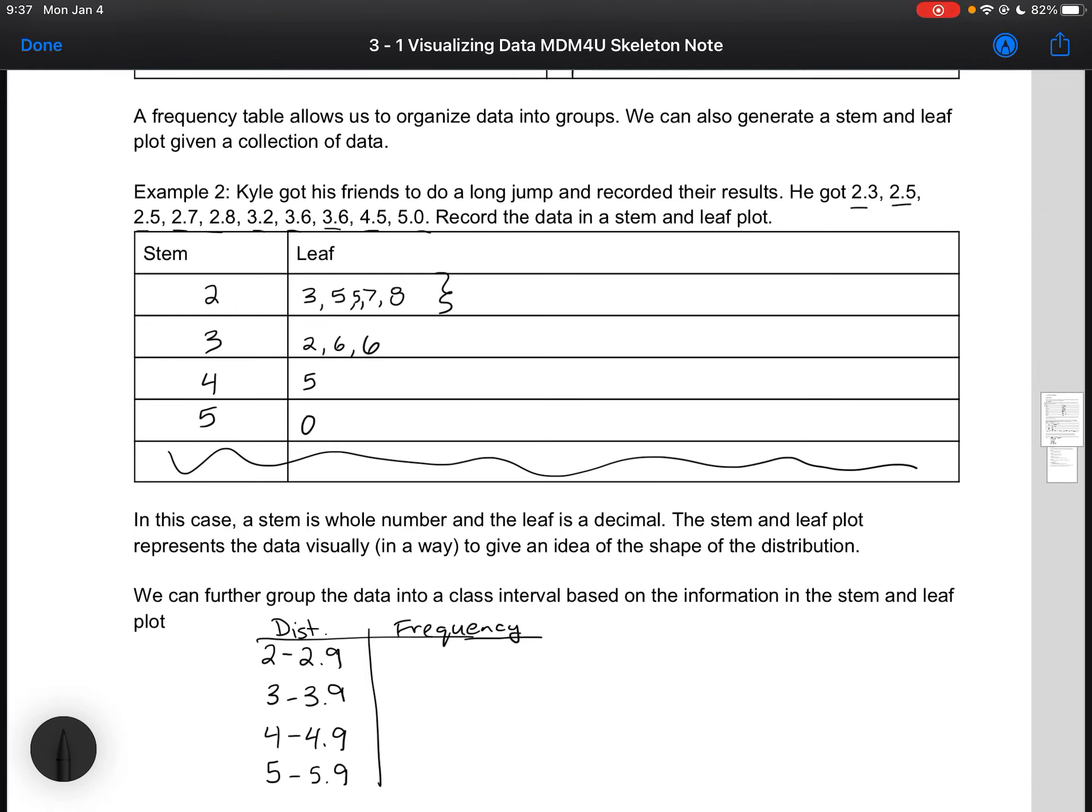So another way to organize your data. The stem and leaf plot, if you had numbers—maybe heights of students, so you were looking at 160, 170—you could use the first two numbers as your stem and then the ones digit would be your leaf. So 5, 3, 1, and 1 gives you an idea, same information as your data.